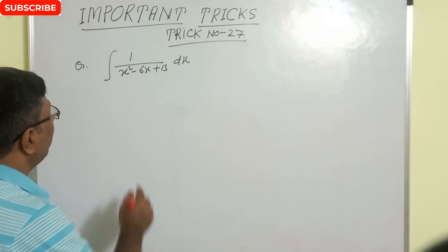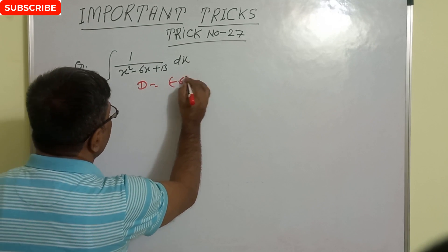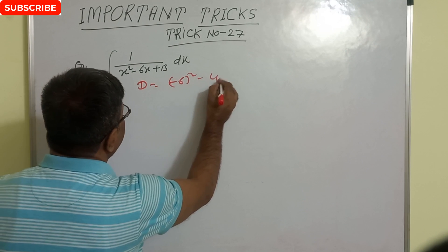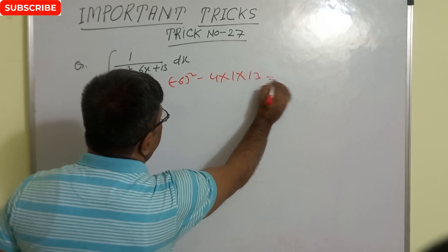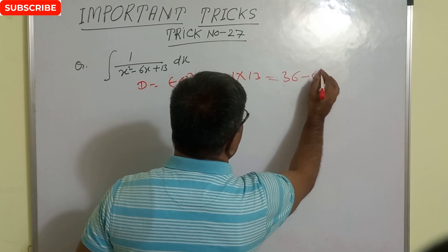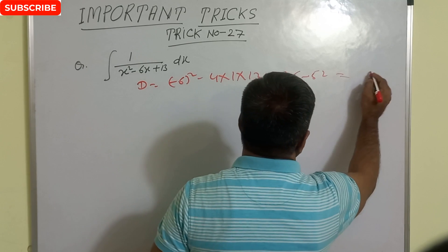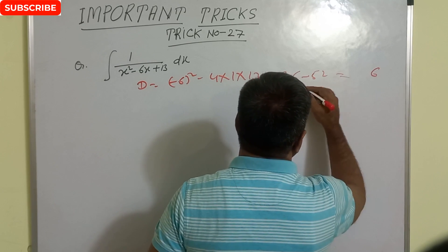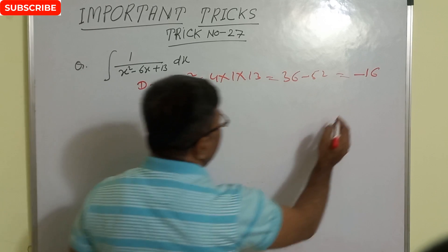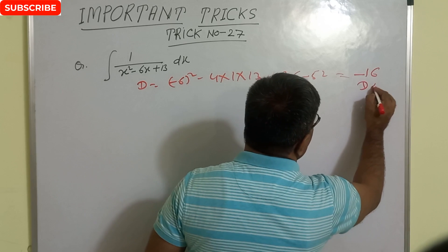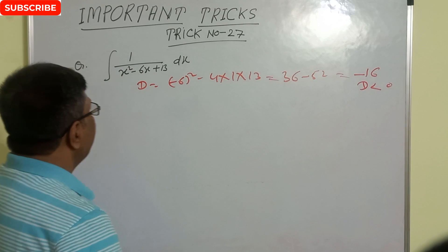First, find the discriminant D. D equals b squared minus 4ac, so that is 36 minus 52. That gives 12 minus 6 — wait, that is minus 16. So D is less than 0.